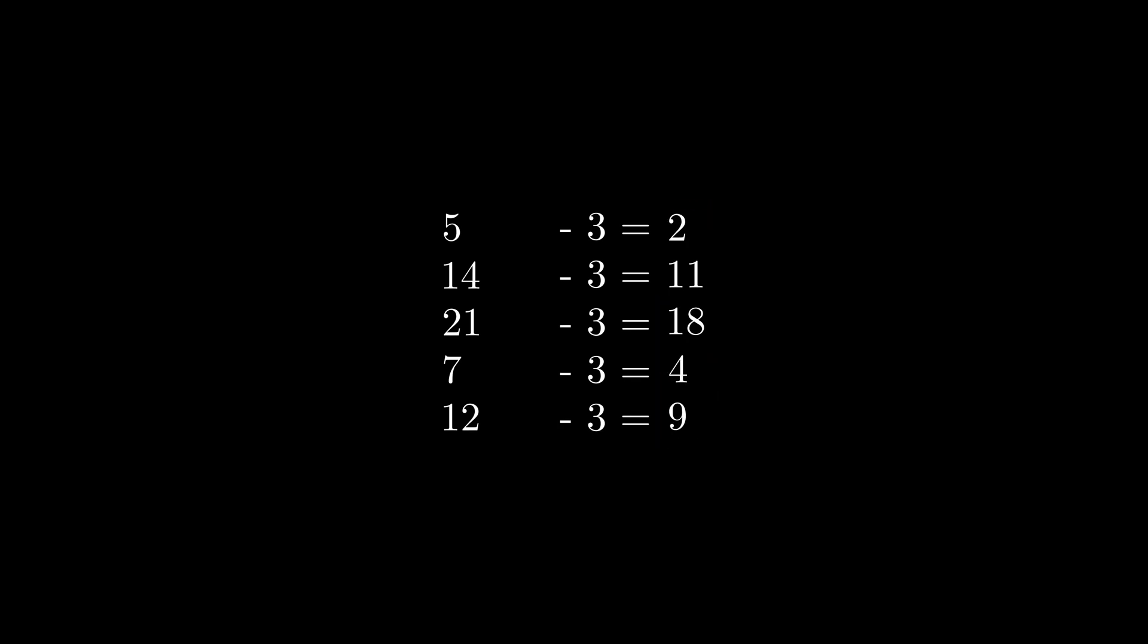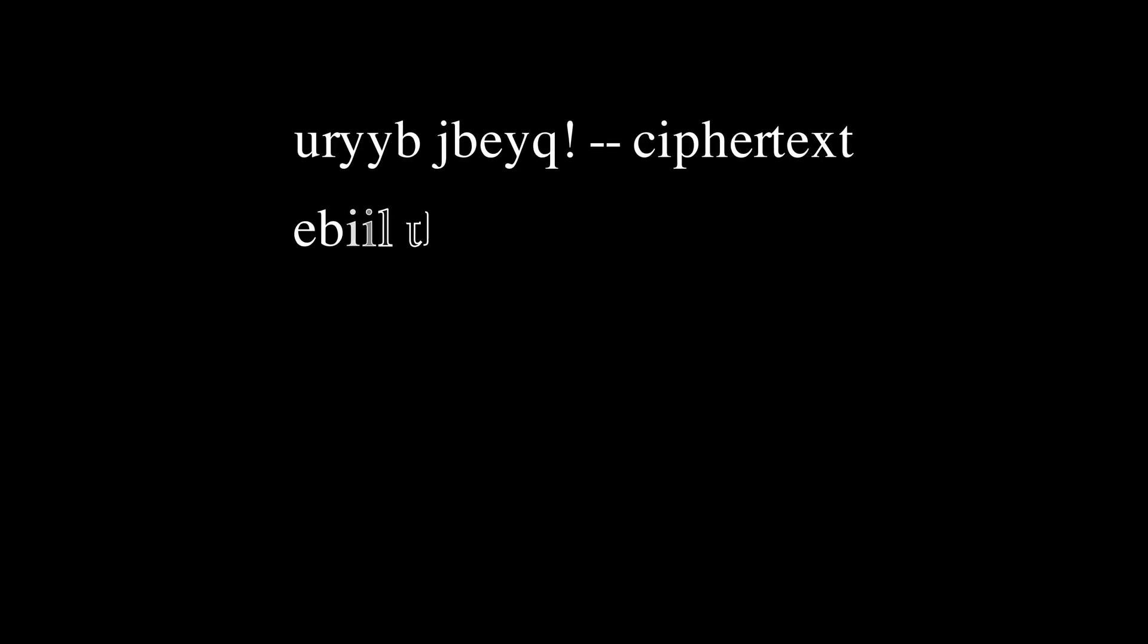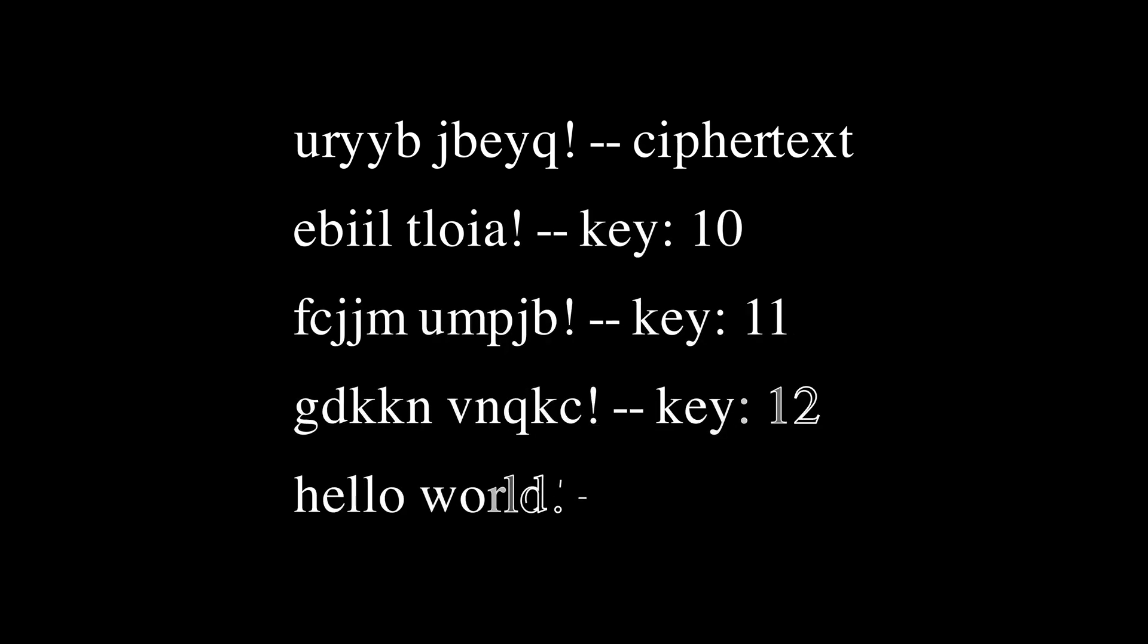Sometimes you don't even need the original message to guess the key. For our example, various numbers are possible to be the answer. In other cases, the plaintext could be some sort of sentence in English that was converted into a number. There, you can just start trying different keys, and you will find many messages that look random while one of them is readable.